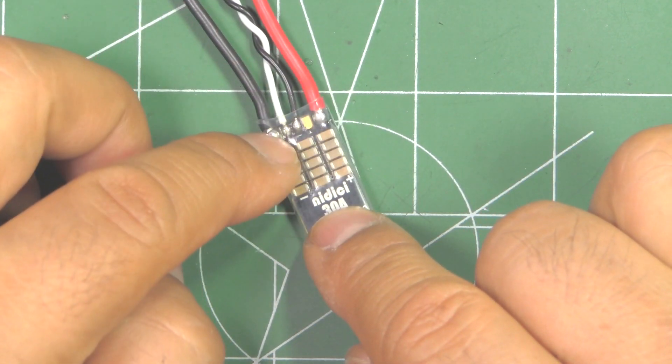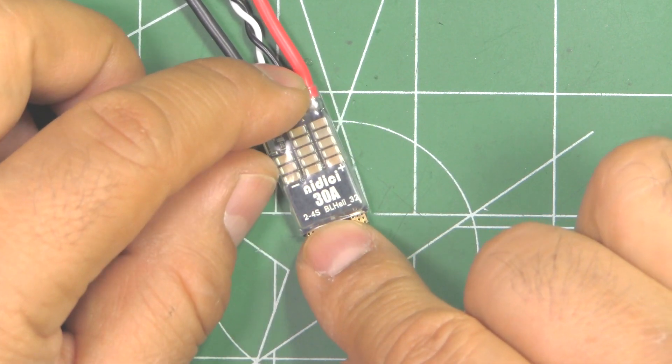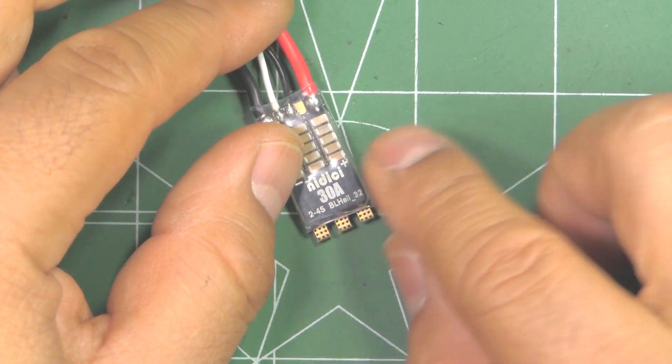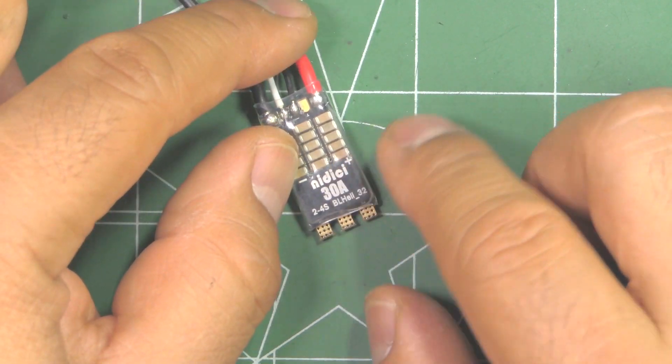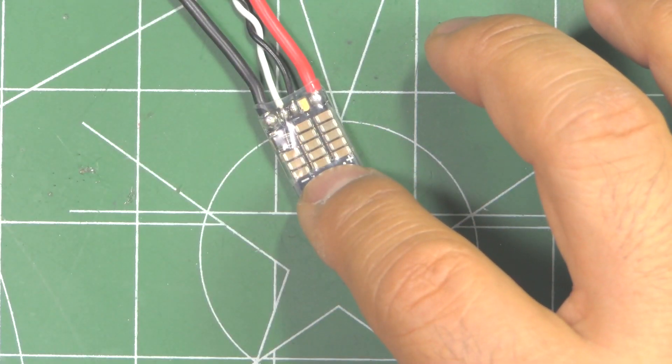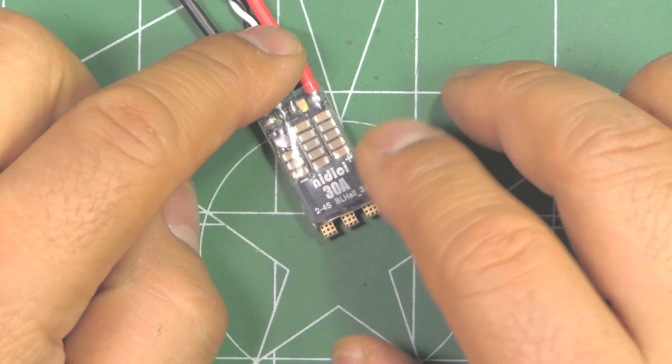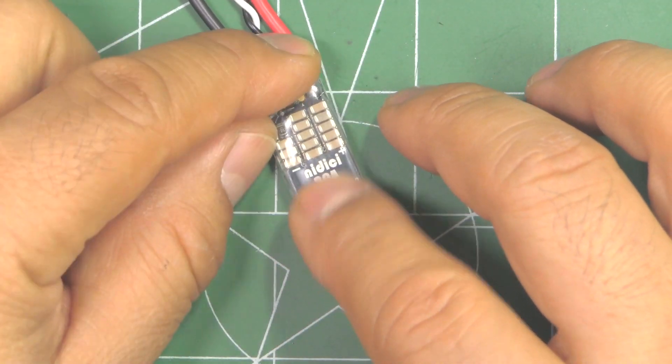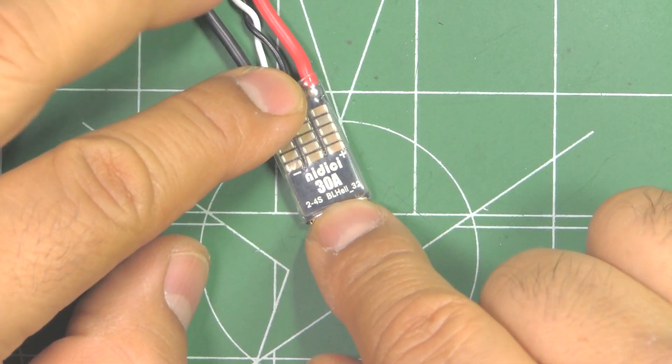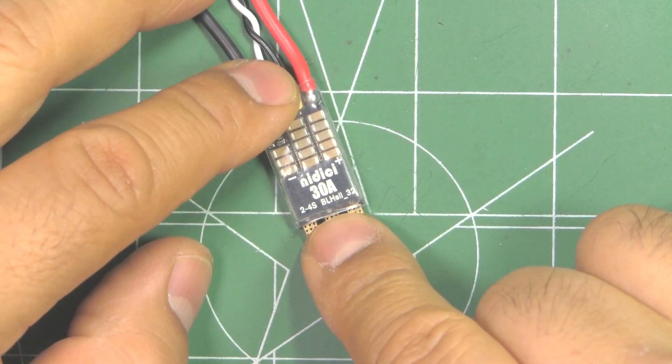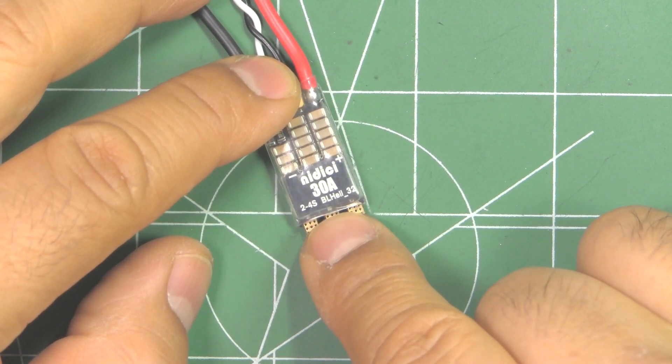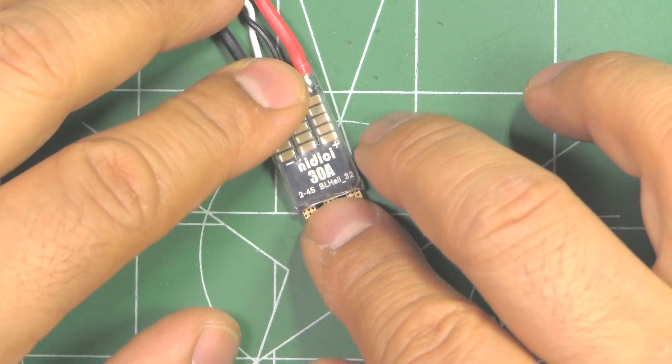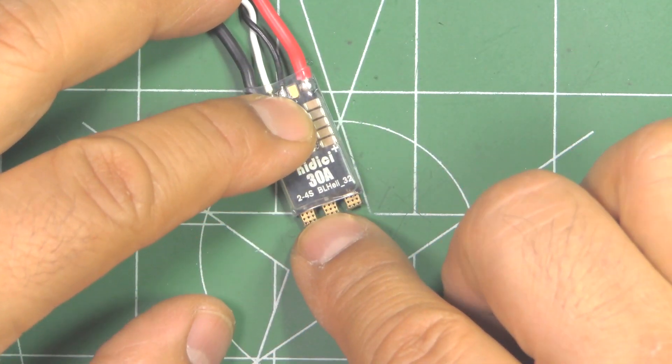That's the advantage of these, and of course you can set them up through the FC with what they call BLHeli pass-through. You just connect the USB to your FC, and then through the FC you'll be able to flash and reverse the motor direction, change all the settings within BLHeli suite. It's got pretty much all the basic features of the BLHeli 32 ESCs.